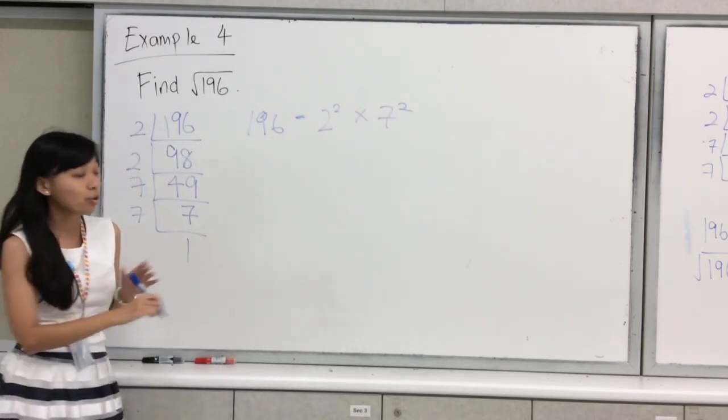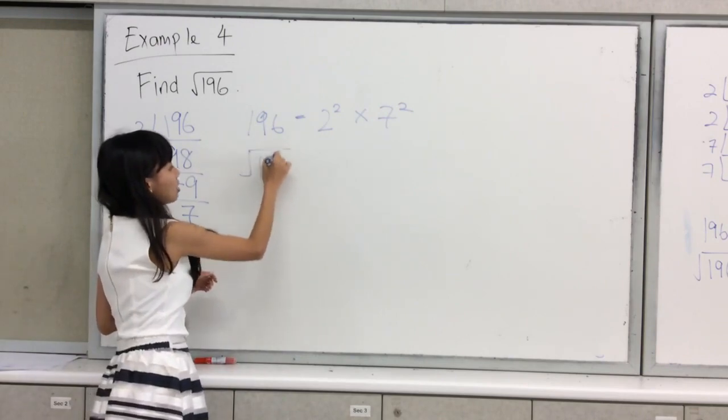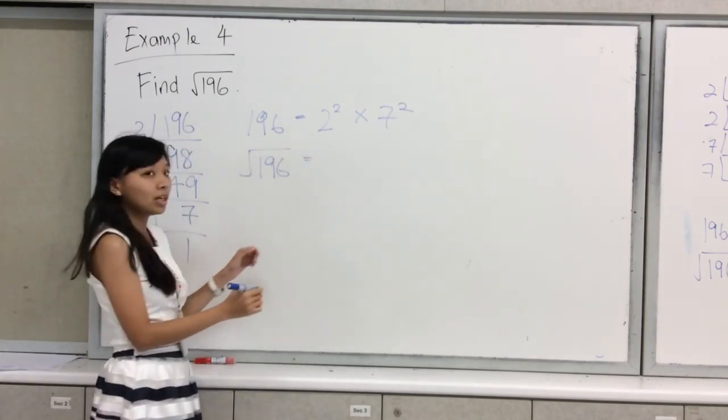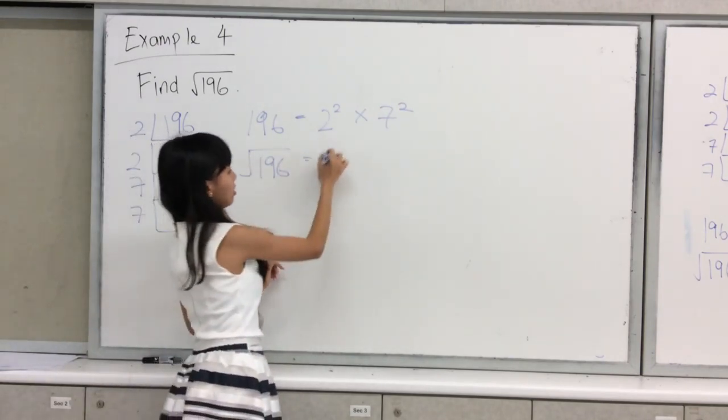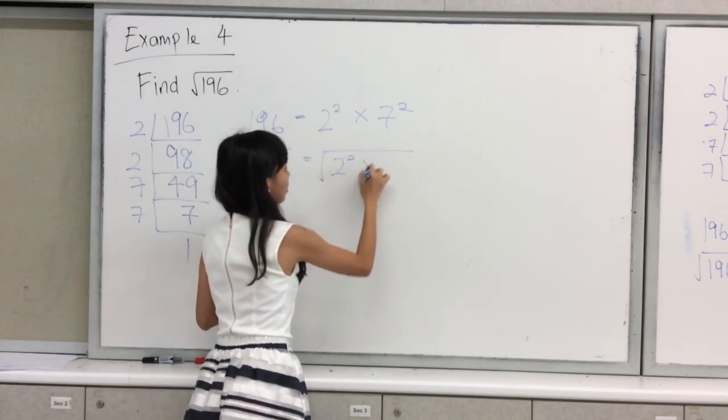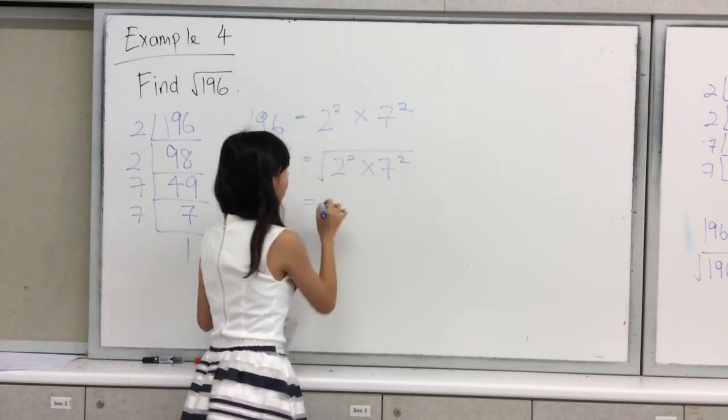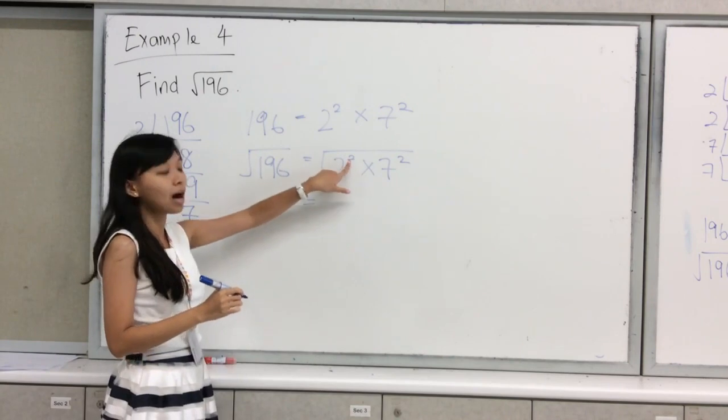So the question is asking to find the square root of 196, which is equivalent to finding the square root of this. In order to find the square root, we divide the power by 2.